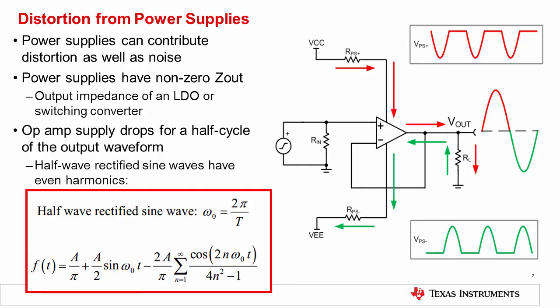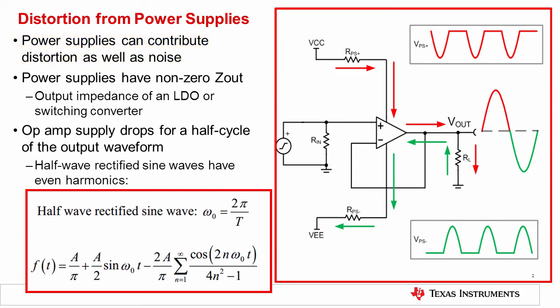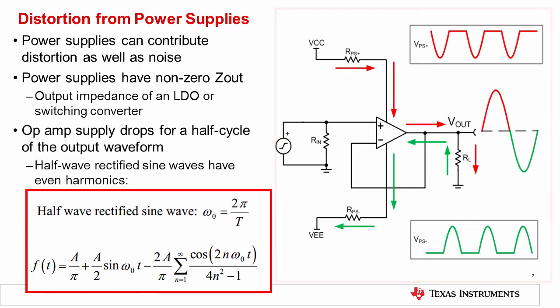The first external source of distortion we will discuss is distortion introduced by the power supply. Power supplies can contribute distortion as well as noise. To understand how this happens, let's look at this circuit with a gain of 1. This op amp sources current out of the positive supply into the load resistor for positive half cycles of the sine wave, and it sinks current out of the negative supply during negative half cycles of the sine wave.